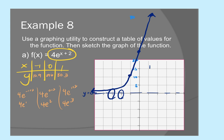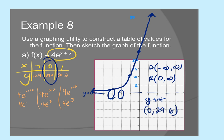The domain is (−∞, ∞). The range is (0, ∞). The y-intercept is (0, 29.6) — from the middle row of the chart where we plugged in x = 0.